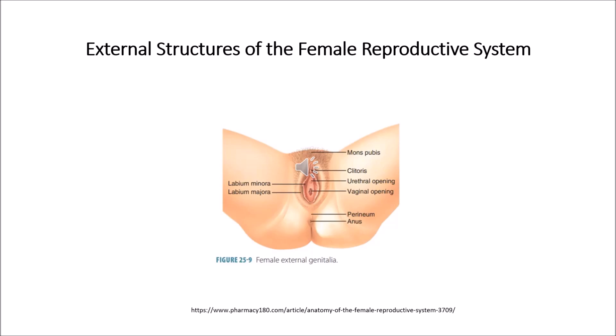The next part is the clitoris. The two labia minora meet at the clitoris, which is a very small and sensitive structure that is compared to the penis in males. The clitoris is covered by a fold of skin called the prepuce, which is similar to the foreskin at the end of the penis. Like the penis, the clitoris is very sensitive to stimulation and can become erect.